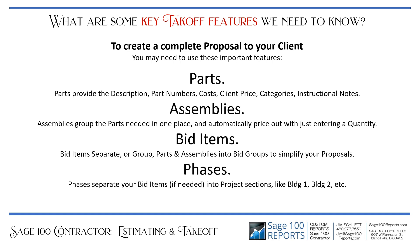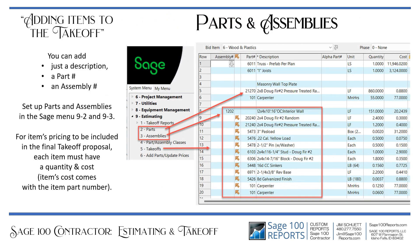Assemblies group the parts needed in one place and automatically price out with just entering a quantity. Bid items separate or group parts and assemblies into bid groups to simplify your proposals. Phases separate your bid items, if needed, into project sections like building one, building two, et cetera. In the Sage menu, 9.2 is where you create the parts and 9.3 the assemblies.